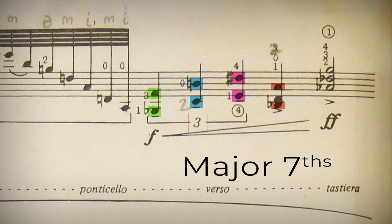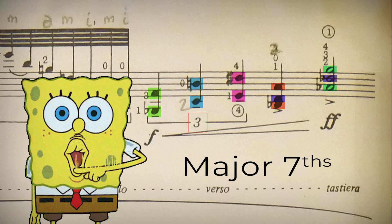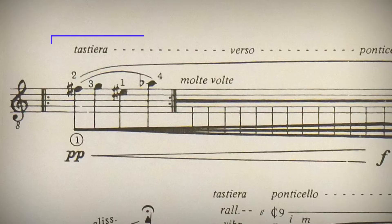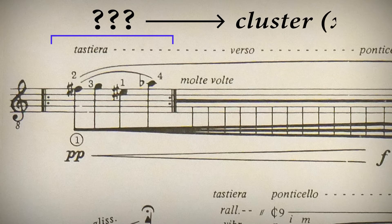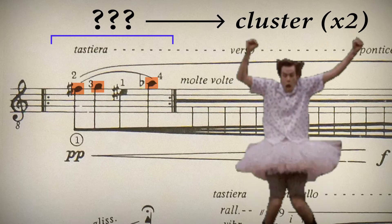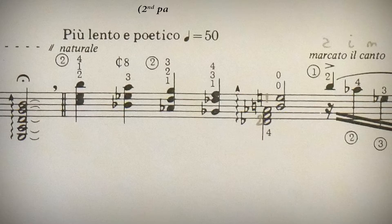As Ginastera is bold, he returns to major sevenths within the triplet figure: G flat to F, C to B, E to D sharp. Then B flat to A and A flat to G, with added notes creating another layer of major sevenths. I'll pause the video so you can analyze the next passage. The answer: clusters — in this case double clusters. E sharp, F sharp, G form the first cluster, and F sharp, G, A flat form the second.